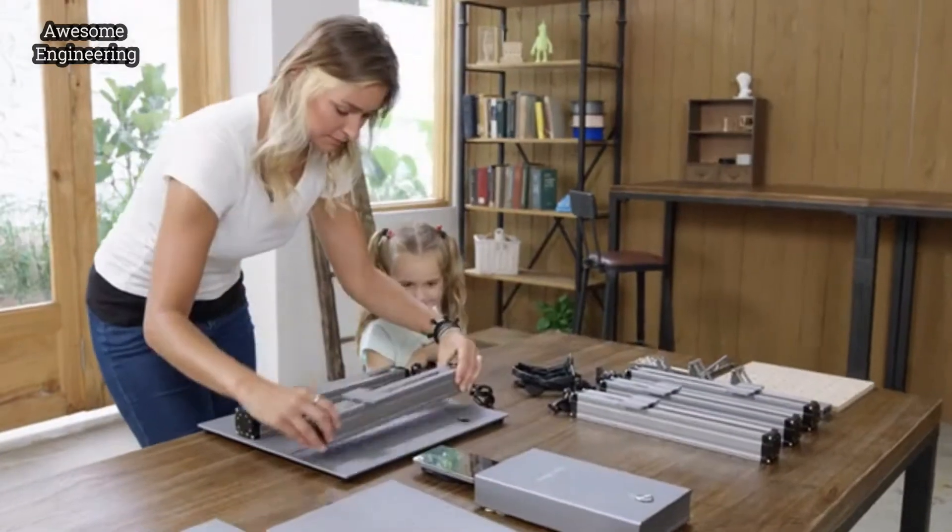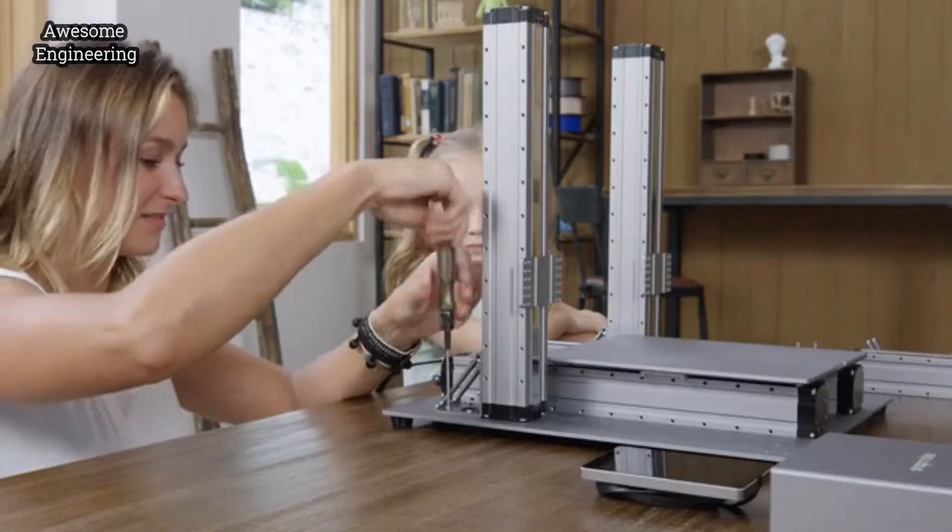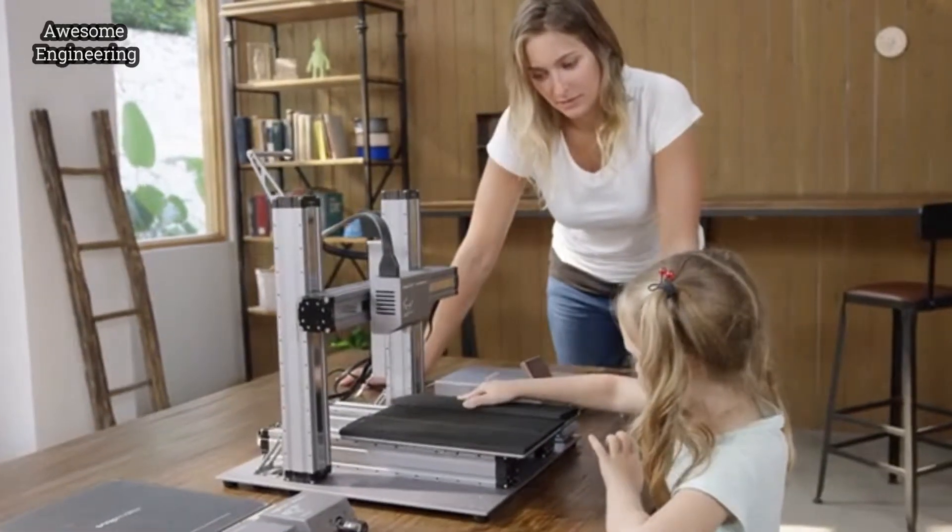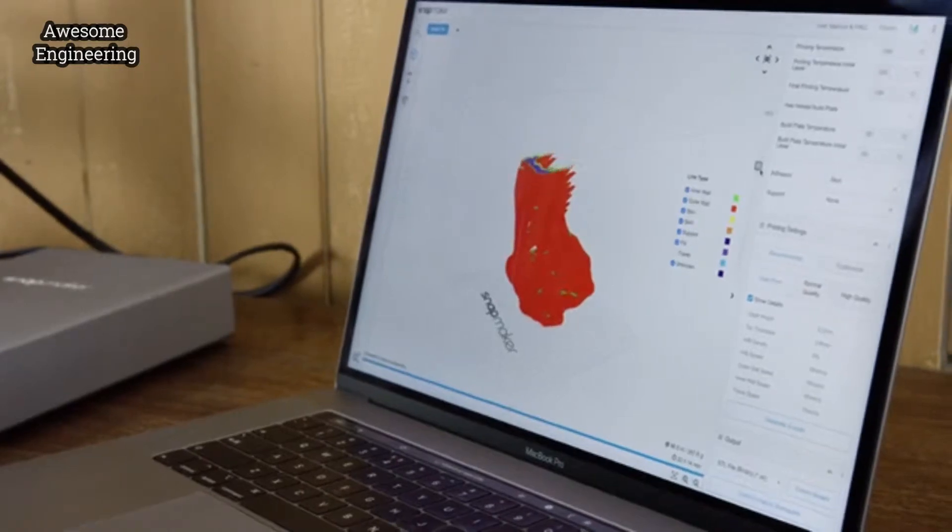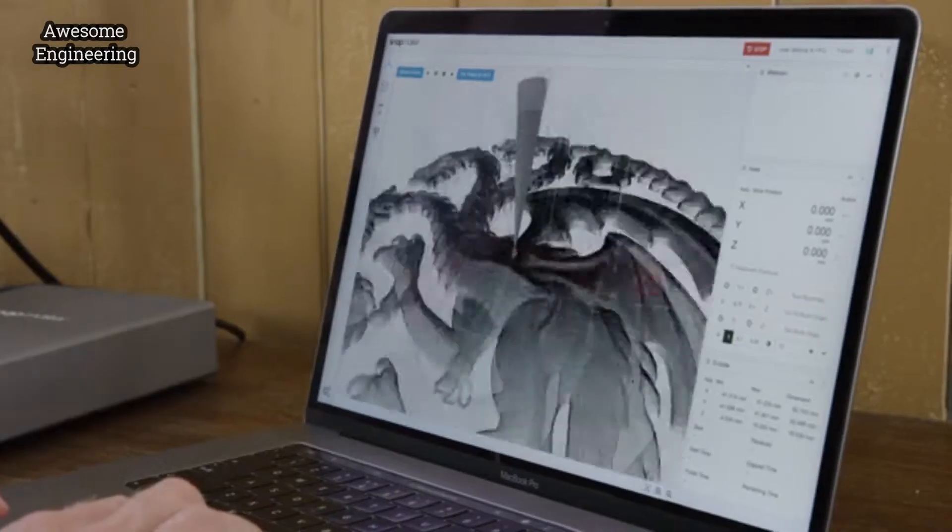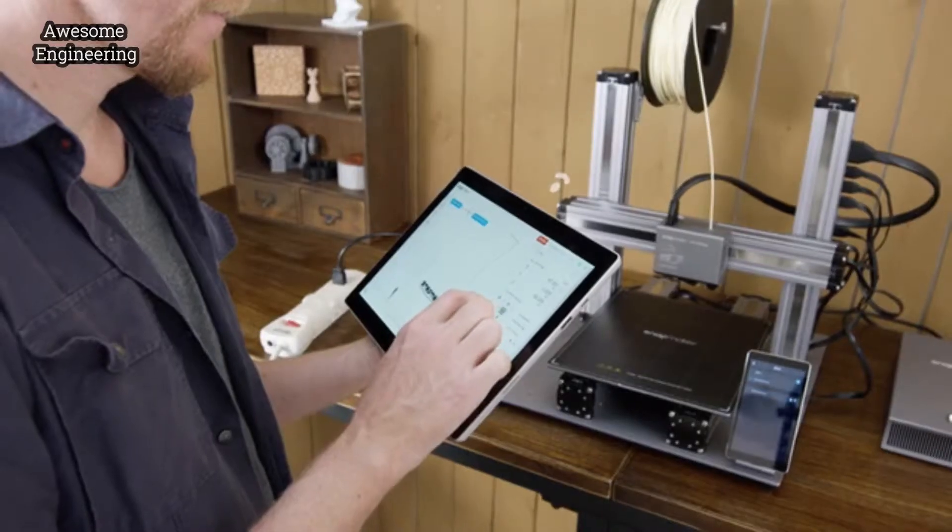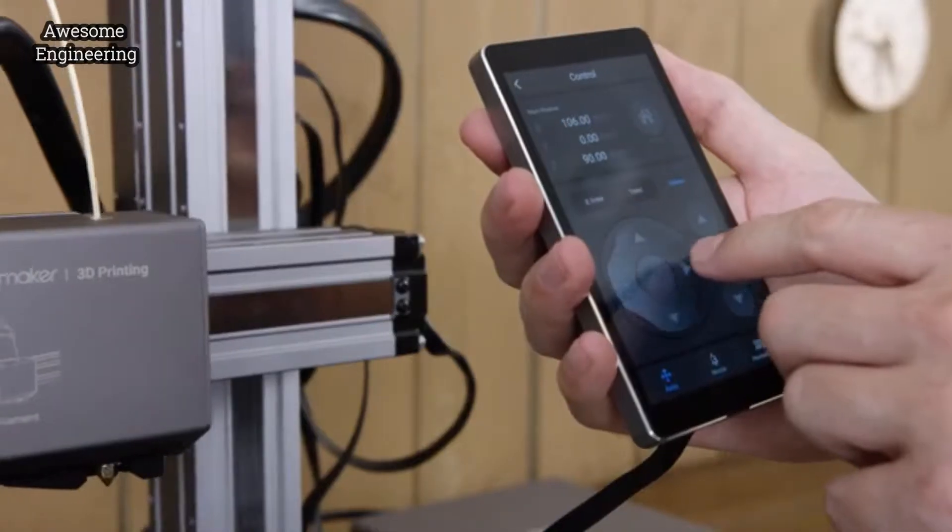The new Snapmaker is modular and it only takes a few steps to set up. Our software has greatly simplified the process of 3D printing, laser engraving and CNC carving. You can also connect and control your Snapmaker via Wi-Fi or with the smart touchscreen.